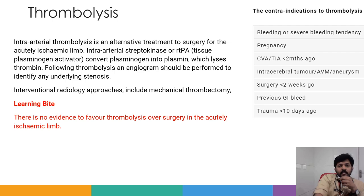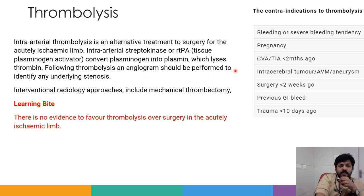Provided the patient has no contraindications — such as bleeding tendency, pregnancy, recent CVA, intracerebral tumor, AV malformation, surgery within 2 weeks, previous GI bleed, or trauma within 10 days — intra-arterial thrombolysis is an alternative treatment to surgery. Intra-arterial streptokinase or tissue plasminogen activator converts plasminogen into plasmin, which lyses thrombus. Following thrombolysis, an angiogram should be performed to identify any underlying stenosis. Interventional radiology approaches also include mechanical thrombectomy. There is no evidence to favor thrombolysis over surgery in the acutely ischemic limb.